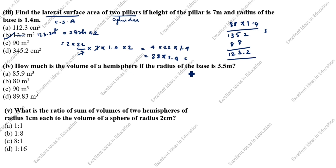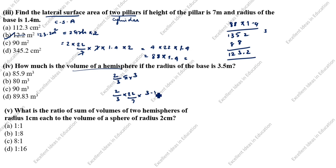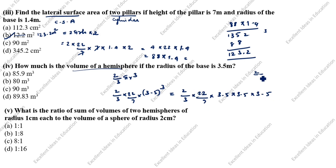Next, how much is the volume of a hemisphere if the radius of the base is 3.5 meters? The volume of hemisphere formula is (2/3)πr³. So: (2/3) × (22/7) × 3.5 × 3.5 × 3.5. We write 3.5 as 7/2, so: (2/3) × (22/7) × (7/2) × (7/2) × (7/2).